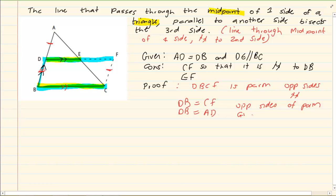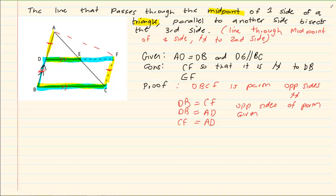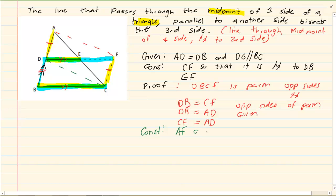We also have that DB is equal to AD — that was given to us at the beginning. So we can conclude that CF is equal to AD. Now we construct another line: AF and DC. We already know that those lines are parallel to each other, because we constructed it such, and we know that they are equal.